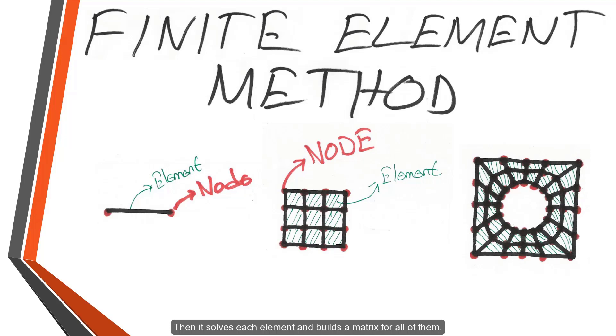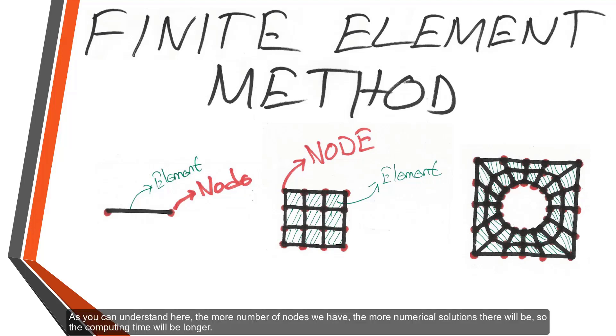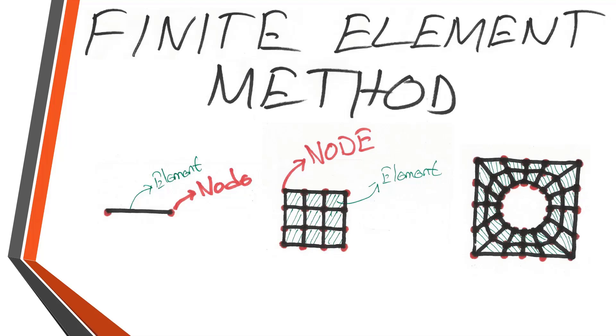Then it solves each element and builds a matrix for all of them. In order to solve each element, each element needs to have its own coordinate system. As you can understand here, the more number of nodes we have, the more numerical solutions there will be. So, the computing time will be longer.